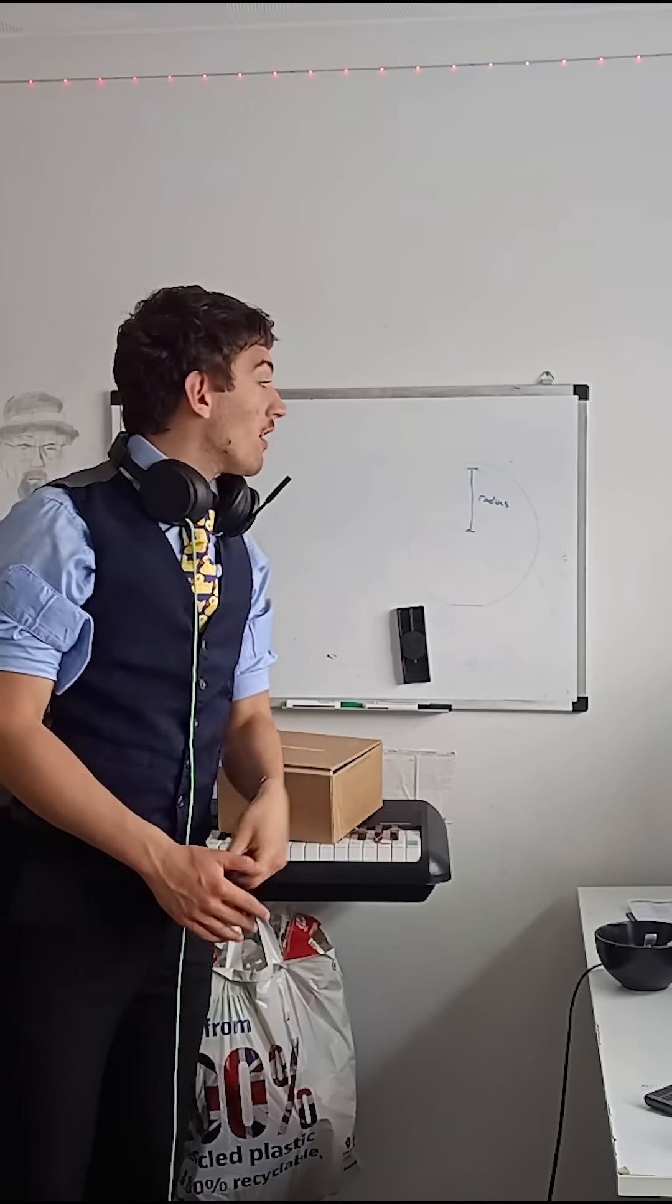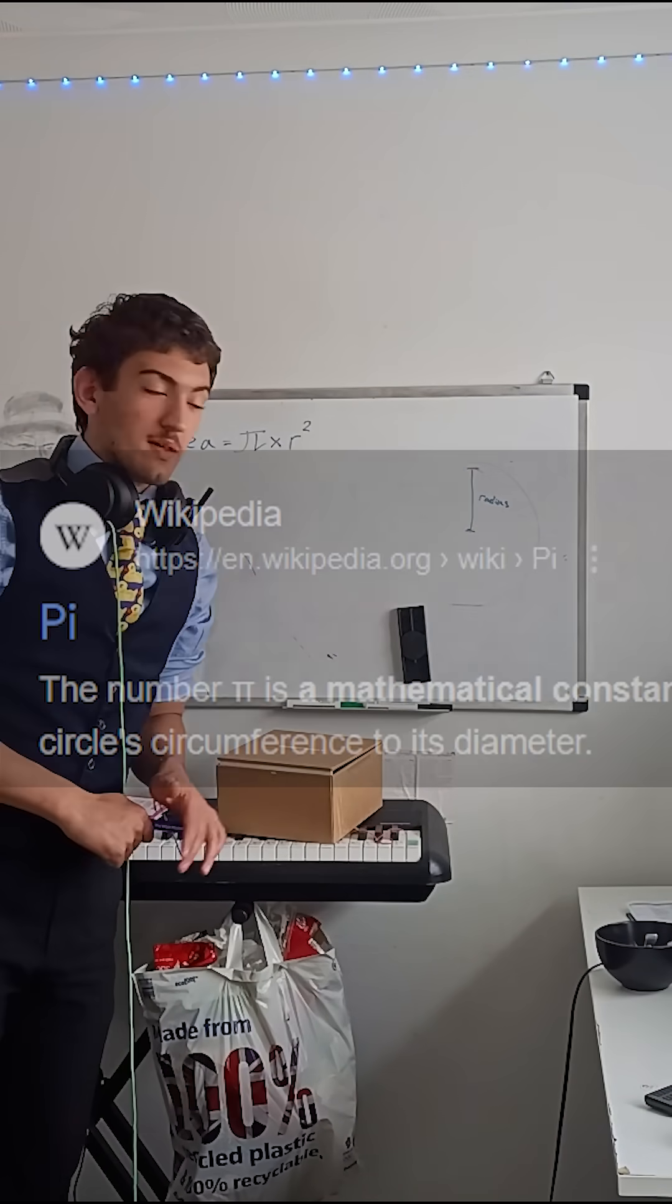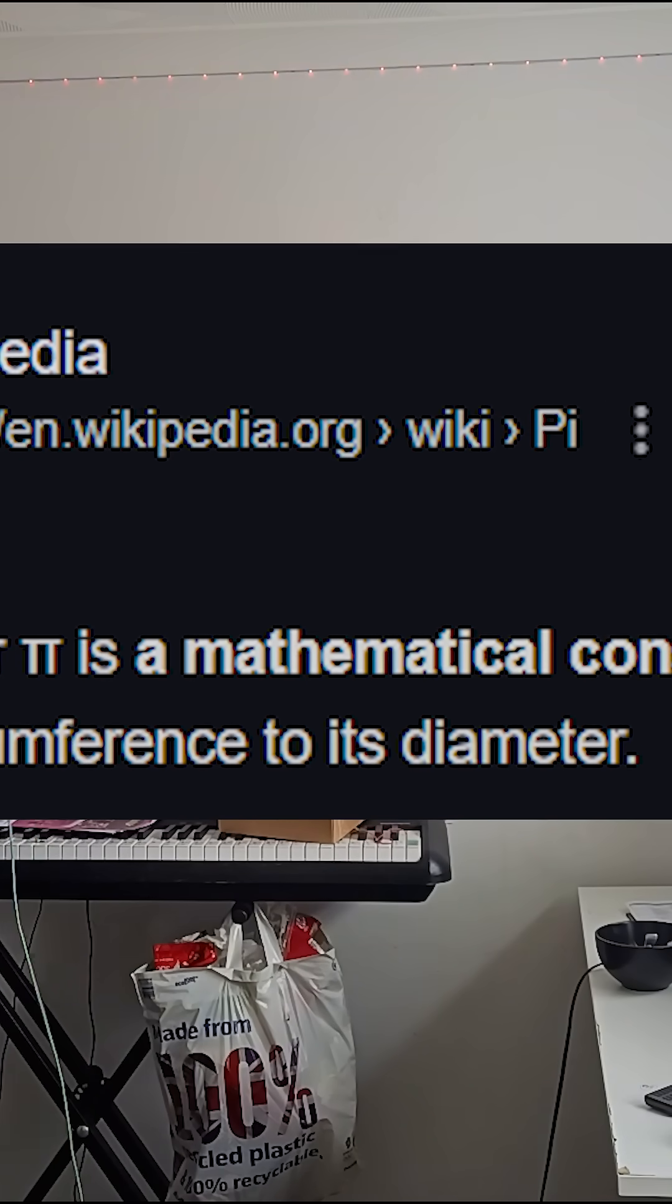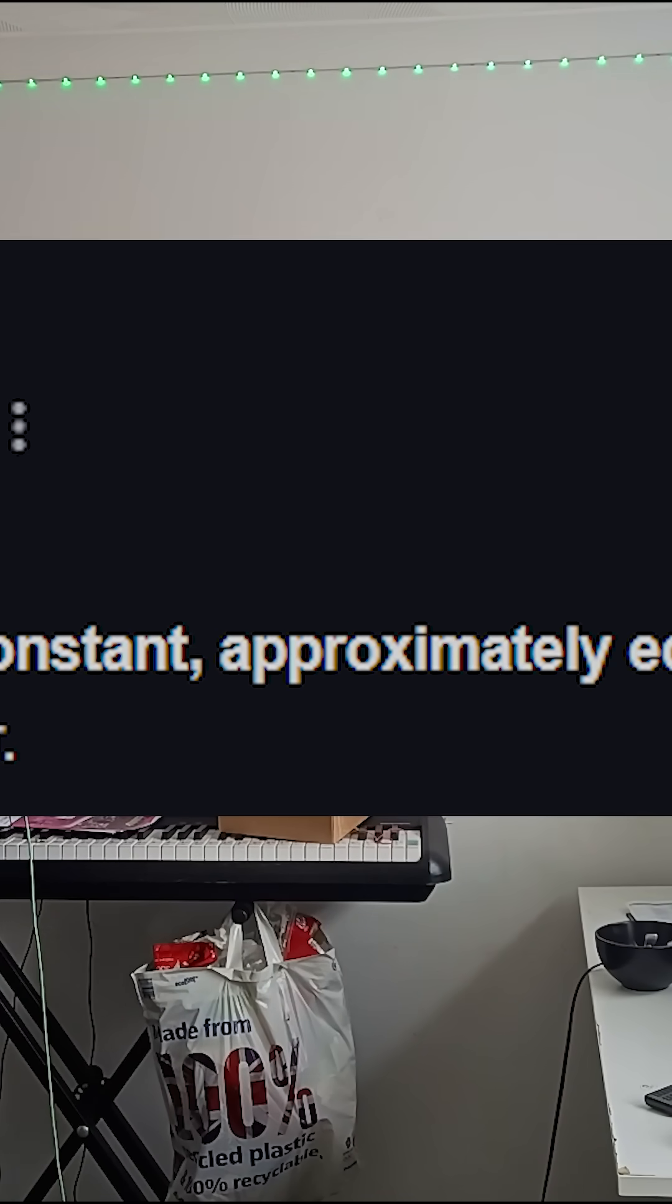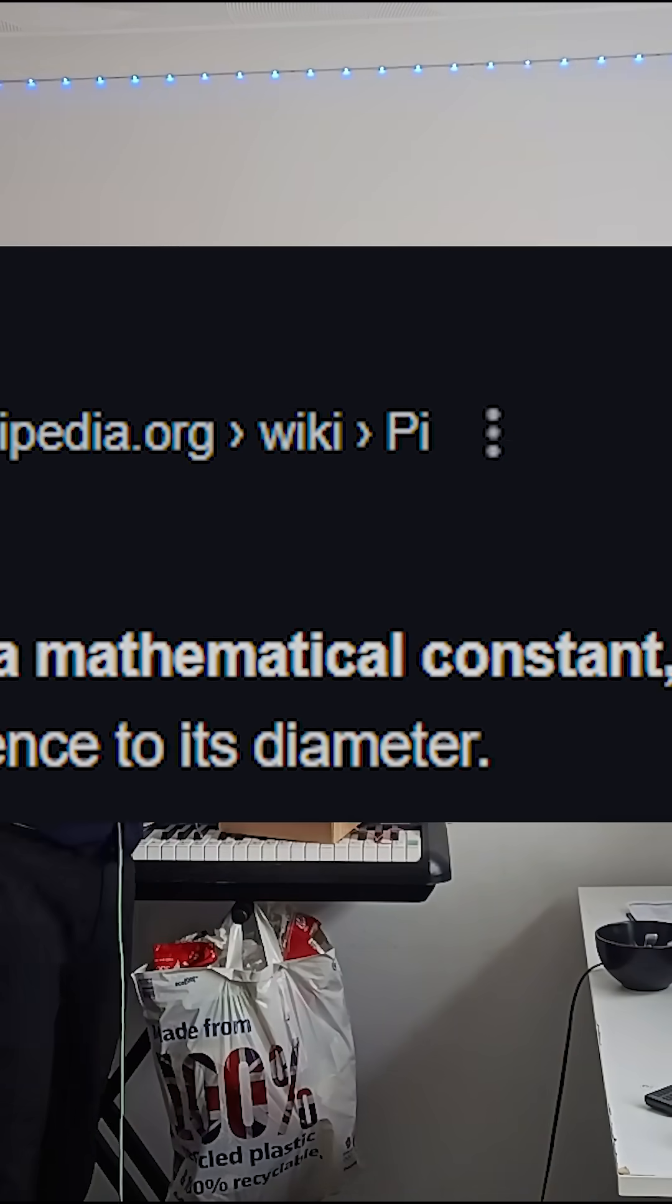How to figure out the area of a circle is pi times radius squared. In fact, according to Wikipedia, the number pi is a mathematical constant approximately equal to 3.14159. That is the ratio of a circle's circumference to its diameter.